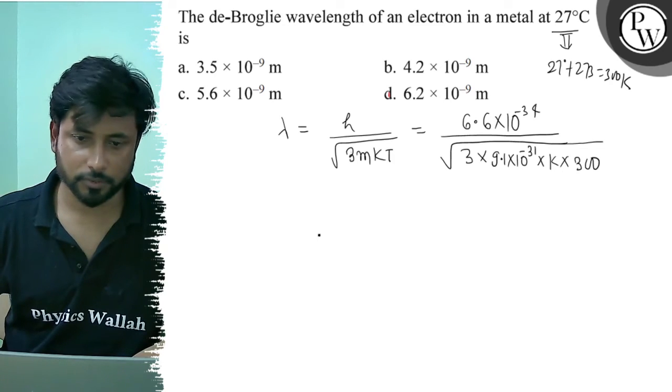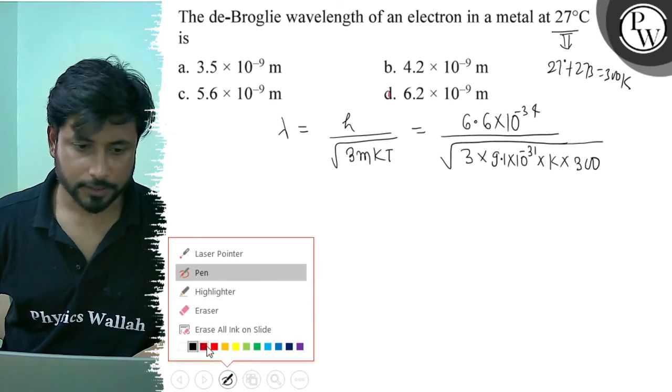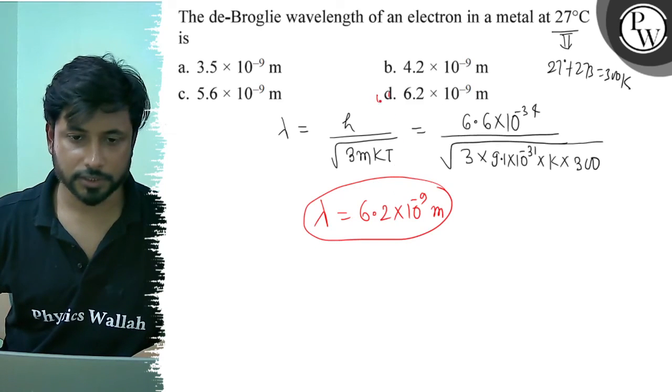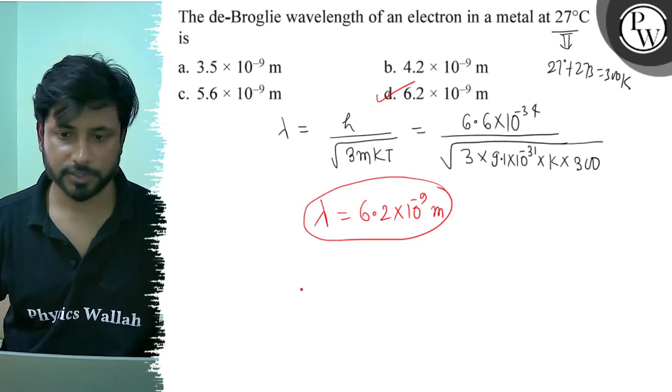And if we solve it, the value is 6.2 into 10^-9 m. So, the final answer is option D: 6.2 x 10^-9 m.